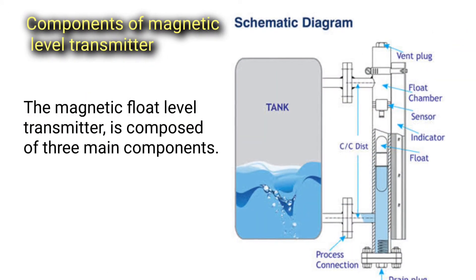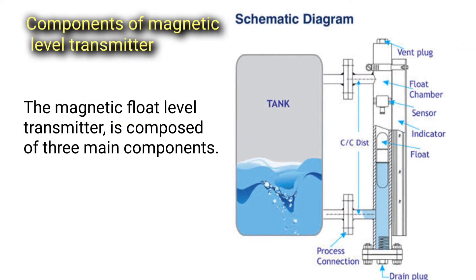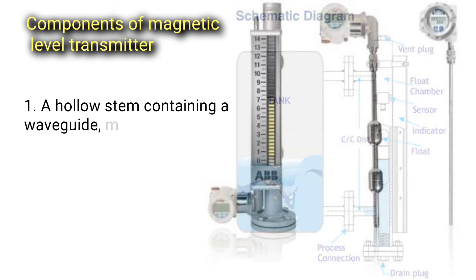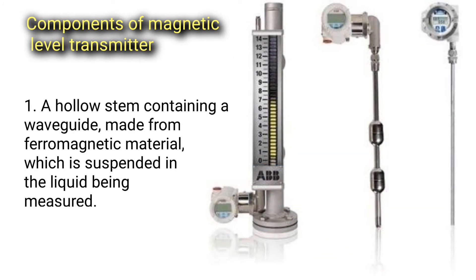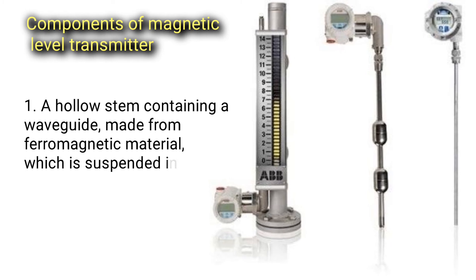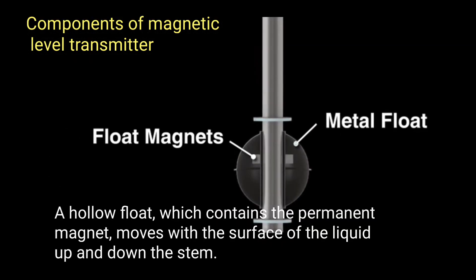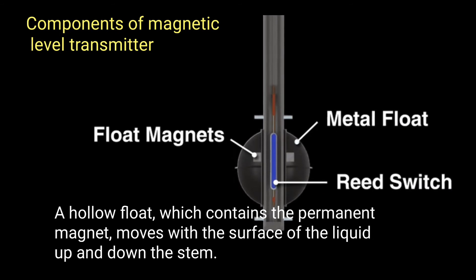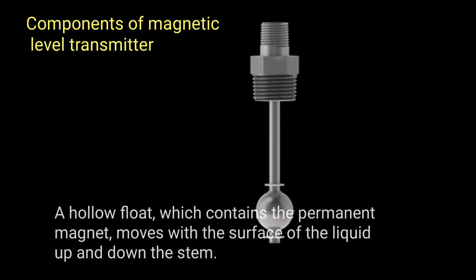The magnetic float level transmitter is composed of three main components. One, a hollow stem containing a waveguide made from ferromagnetic material which is suspended in the liquid being measured. Two, a hollow float which contains the permanent magnet and moves with the surface of the liquid up and down the stem.